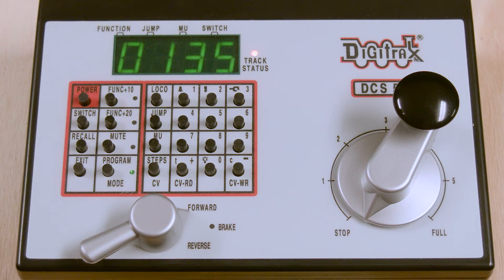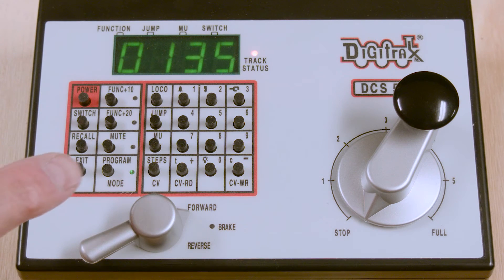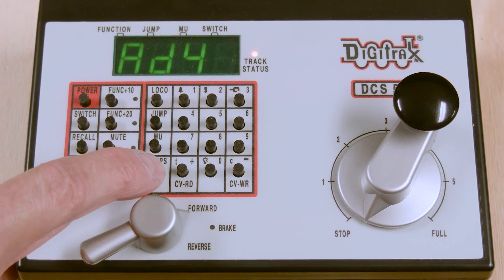While we have it on the program track, we might as well go ahead and program our headlight to the Mars light that we want in this case. So we press the steps key.